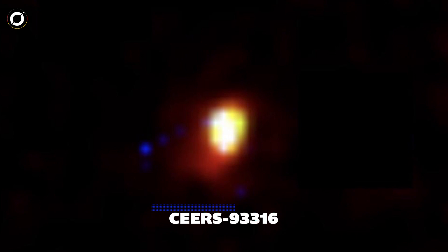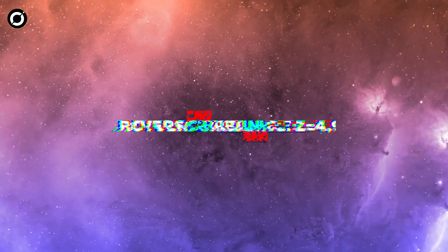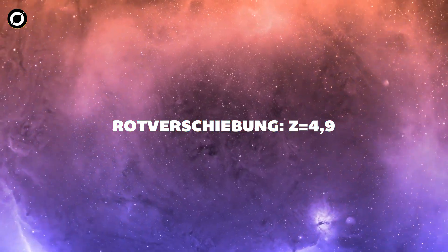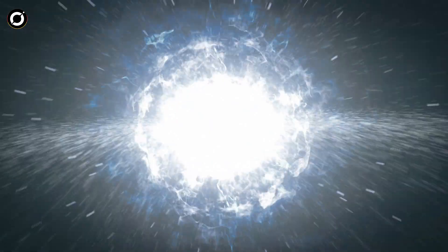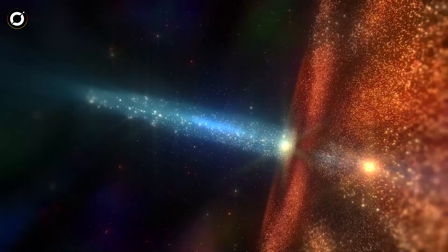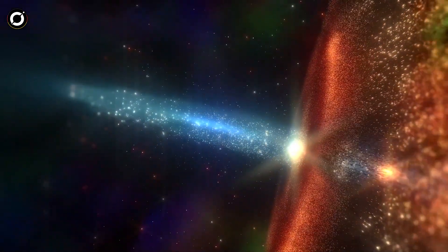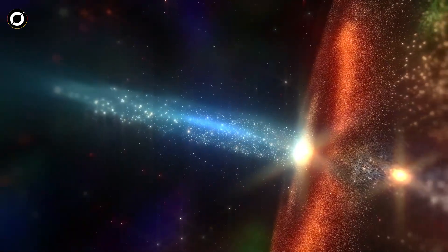Von CERS 1019 untersuchten die Astronomen auch CERS 93316, eine Galaxie, deren Alter ursprünglich auf 235 Millionen Jahre vor dem Urknall geschätzt wurde, was sie erstaunlich alt gemacht hätte. Nach der Untersuchung dieses Systems ergab sich eine Rotverschiebung von Z=4,9, was bedeutet, dass es nur eine Milliarde Jahre nach dem Urknall liegt. Die erste fehlerhafte Schätzung zu CERS 93316 war verständlich. Die Galaxie strahlte ungewöhnlich viel Licht in schmalen Frequenzbändern im Zusammenhang mit Sauerstoff und Wasserstoff aus, wodurch sie blauer erschien, als sie war.